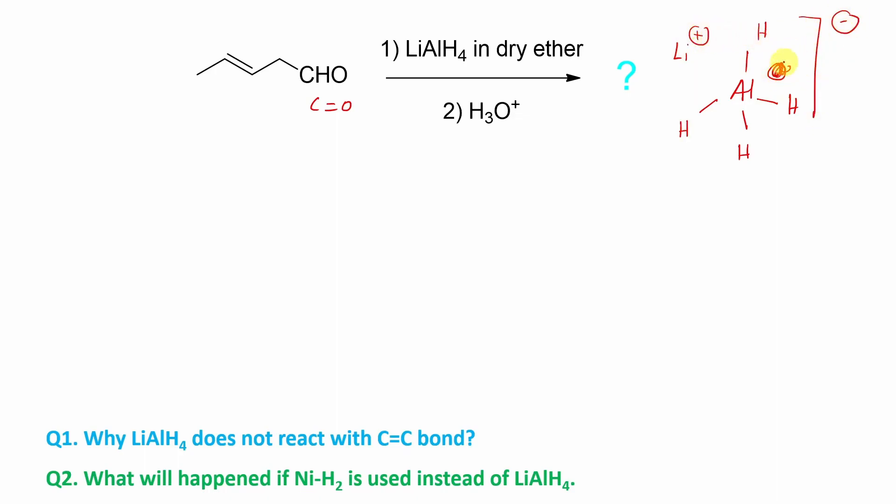Now if you look at the electronegativity difference between aluminum and hydrogen, that's significant. So you can expect that this aluminum-hydrogen bond is a polar bond, or you can say the negative charge density on hydrogen is more. This is more delta negative.